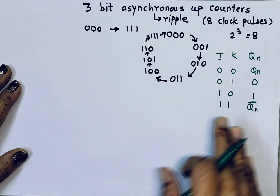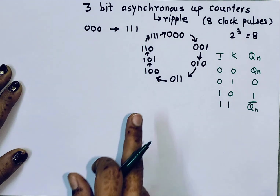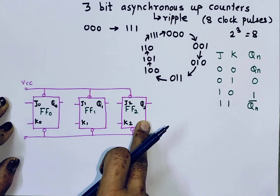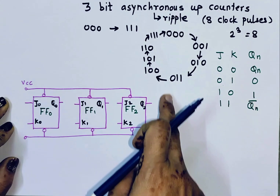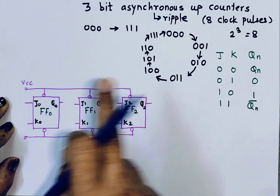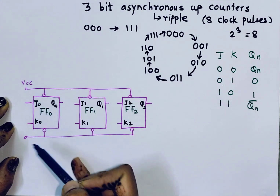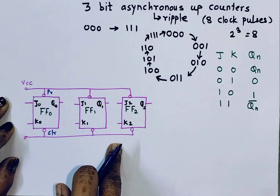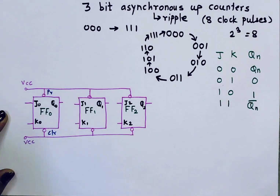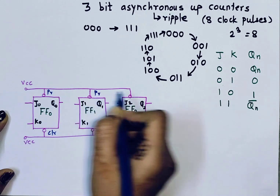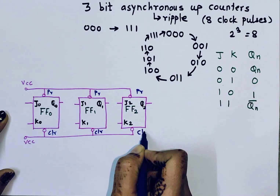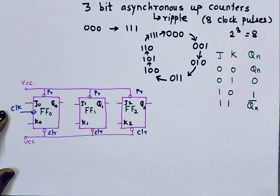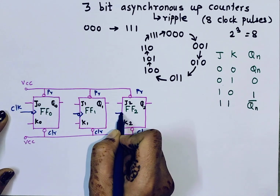Without wasting much time, I will start designing the 3-bit asynchronous counter. For that we need to take 3 JK flip-flops. To implement a 4-bit asynchronous counter, you just need to connect one more flip-flop. So the number of bits equals the number of flip-flops. Here, preset and clear are active-low inputs, and that is why I have connected them to VCC to disable them. The other inputs are J, K, and the most important input — the clock input.